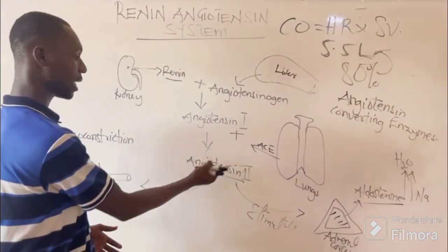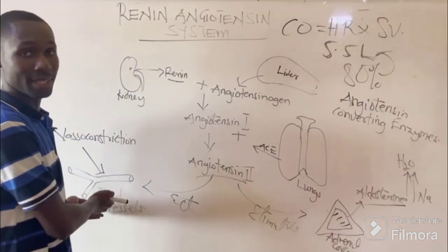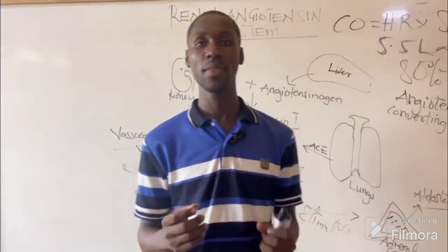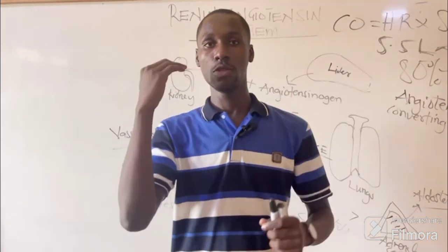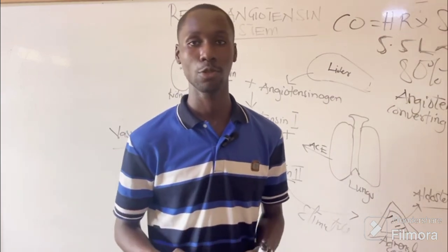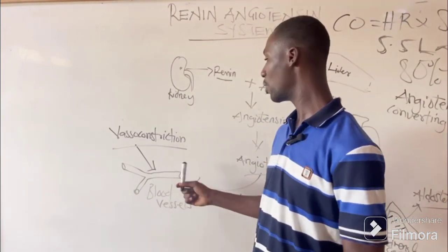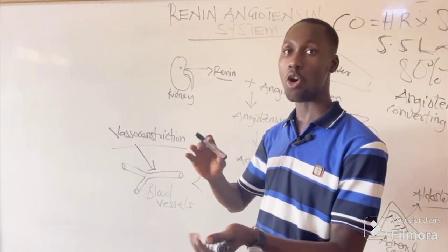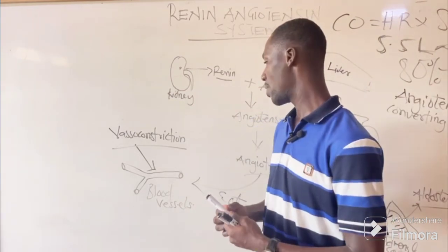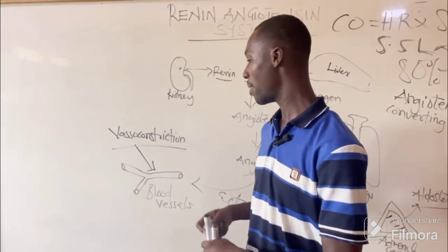Also, angiotensin 2 can use a second pathway to act on blood vessels to cause vasoconstriction — when the size of the blood vessel becomes narrow so that blood pressure increases. Blood pressure increases as peripheral resistance of the blood vessels increases. When there is vasoconstriction, the lumen of the blood vessel becomes small, increasing peripheral resistance, which in turn increases blood pressure.